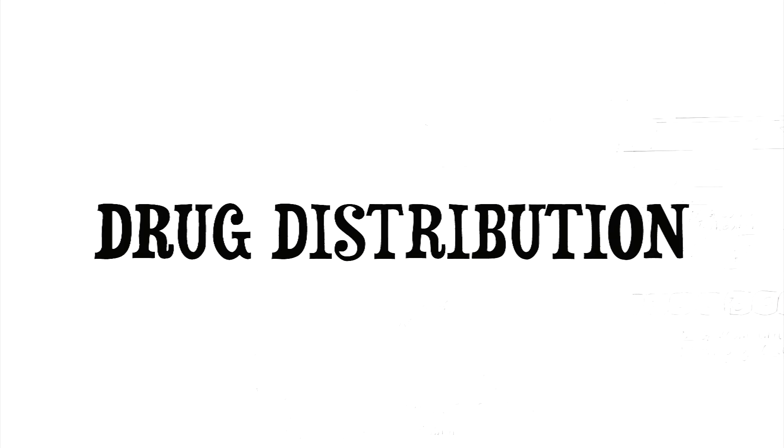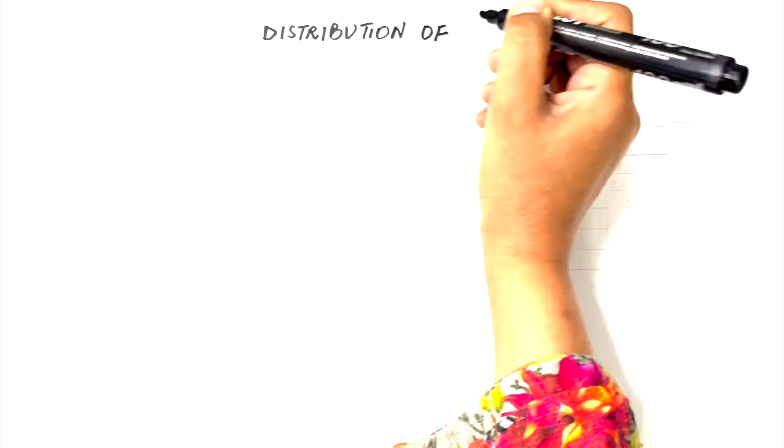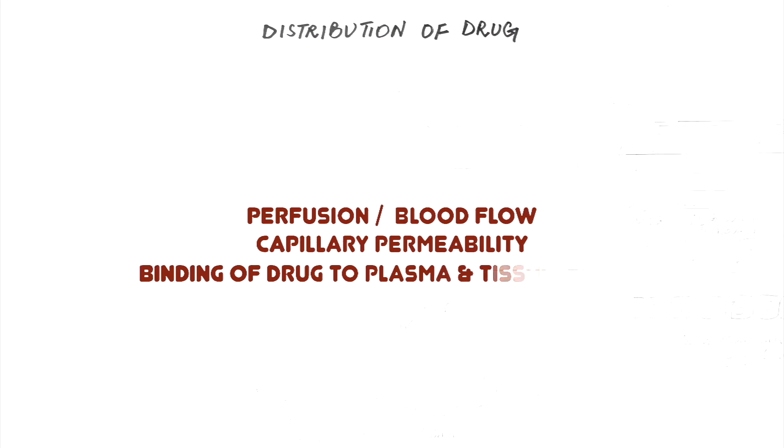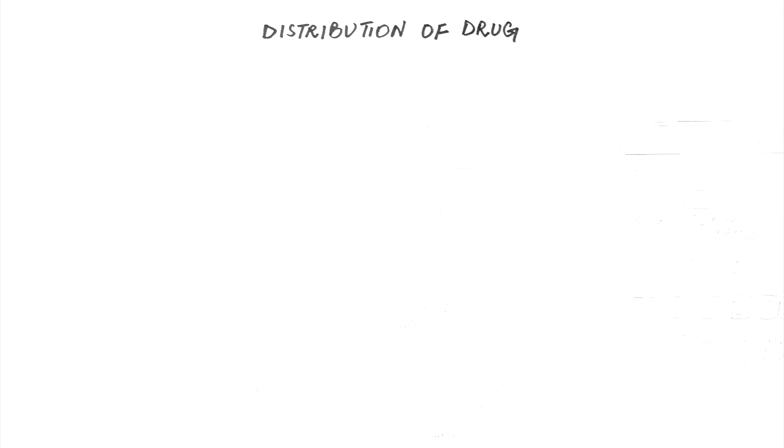So in today's video, we look into drug distribution. Drug distribution is affected by a wide area of factors such as perfusion or blood flow to the region, capillary permeability, binding of drug to plasma and tissue proteins, the lipophilicity of a drug, and finally the volume of distribution of a drug. Let's discuss each one in detail.